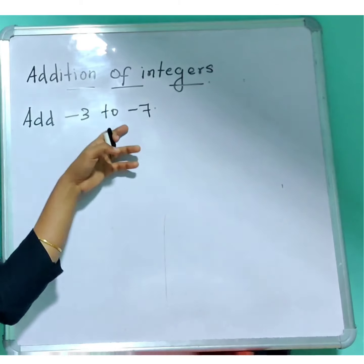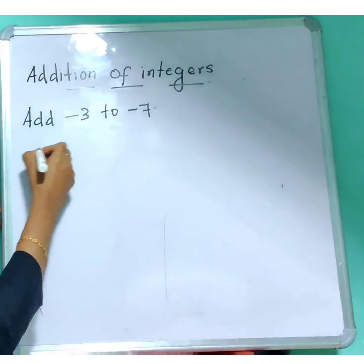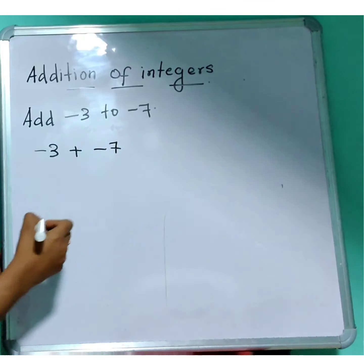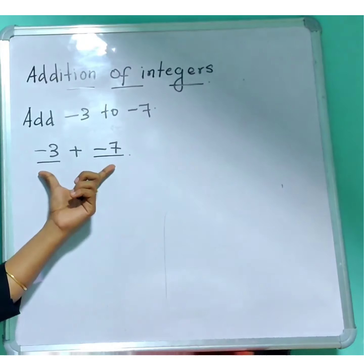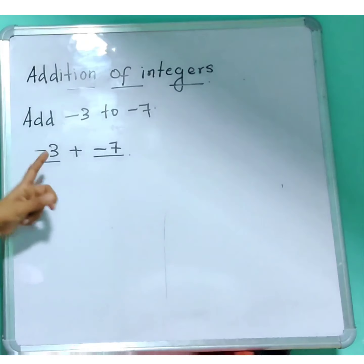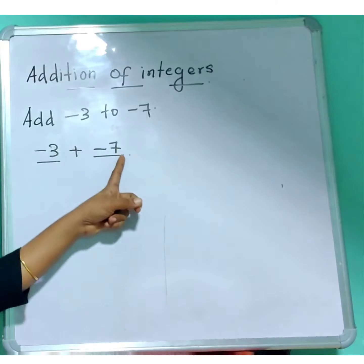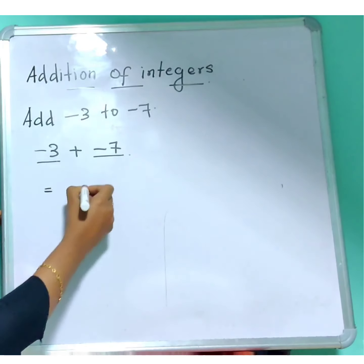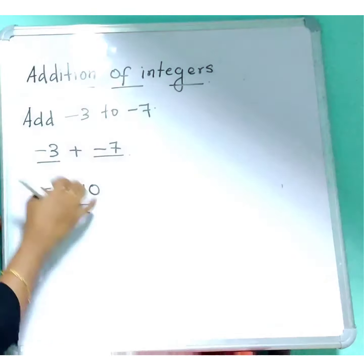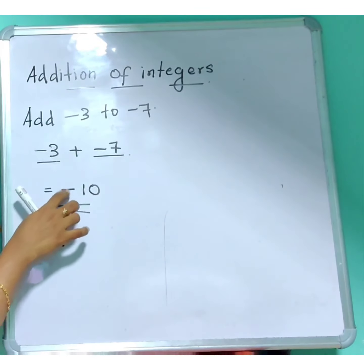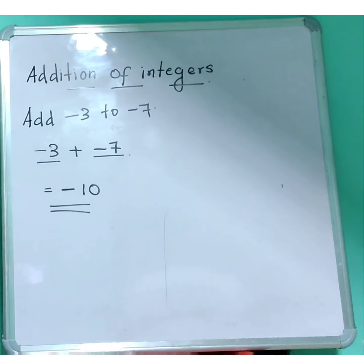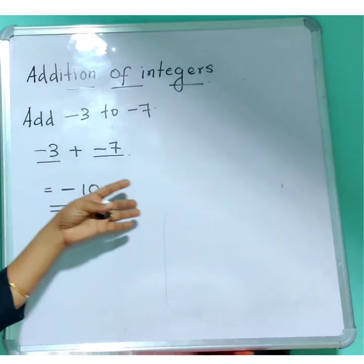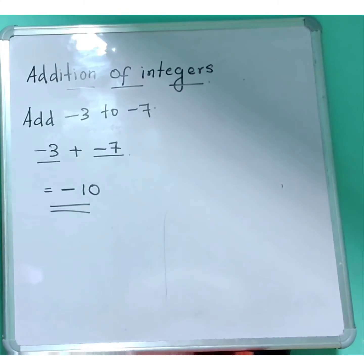Let's take another example: add minus 3 to minus 7, which means minus 3 plus minus 7. Both are negative integers, so you add the numbers: 3 plus 7 equals 10, and put a negative sign. So minus 3 plus minus 7 equals minus 10. This is how you add two negative integers.